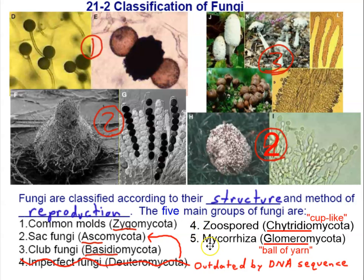Two recently added and very important groups are Chytridiomycota and Glomeromycota. Chytridiomycota — 'chatridiome' means cup-like, referring to the cup-like organ that contains spores before they're released. These are zoospores: they have flagella and are able to swim. This group is ecologically important; specifically, a certain species of chytridiomycete fungi infects the skin of amphibians and prevents them from exchanging gas through their skin, causing them to suffocate and die. This is responsible for amphibian decline.